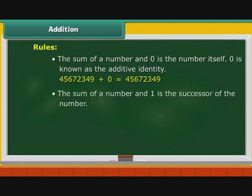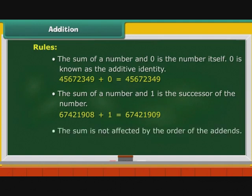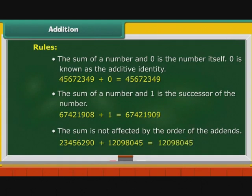The sum of a number and 1 is the successor of the number. For example, 67421908 plus 1 is equal to 67421909. The sum is not affected by the order of the addends. For example, 234562908 plus 12098045 is equal to 12098045 plus 234562908.